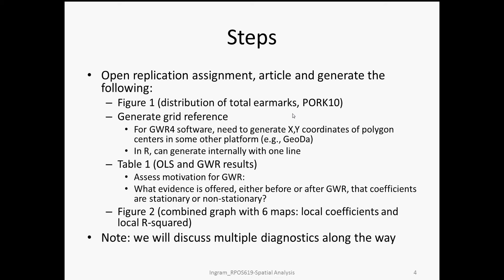One thing to keep in mind while doing this main part of the analysis is to assess the motivation for the GWR analysis in the first place. You should be asking yourself what evidence is offered by the authors, either before or after the GWR, that the coefficients are indeed stationary or non-stationary. Lastly, Figure 2 contains six maps: five graph the local coefficients generated by GWR for the main predictors of interest, and the sixth graphs the local R-squared. Throughout, we'll be discussing multiple diagnostics.